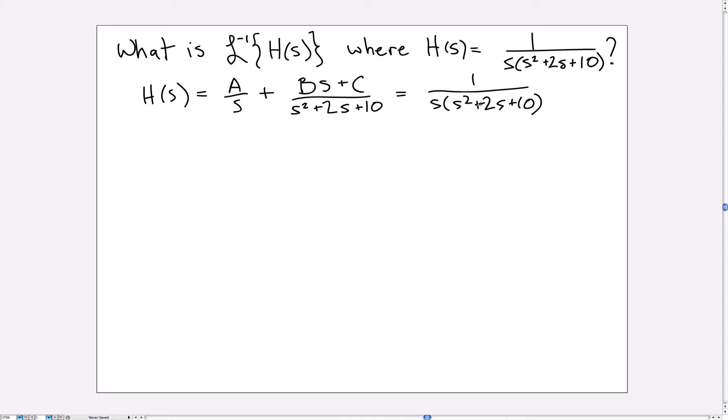And by multiplying through by the full denominator on this side, we get that 1 is equal to A, and now the S cancels, and I'm left with just the quadratic on this term. And then on BS plus C, when we multiply through by the full denominator, the quadratic cancels, and I'm left with just S.